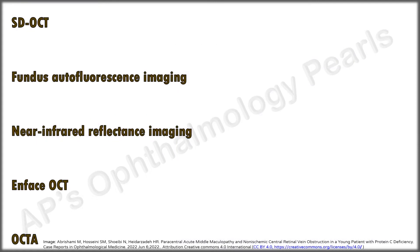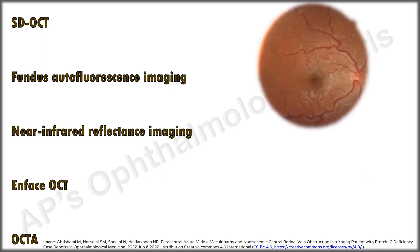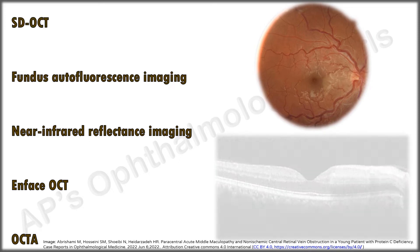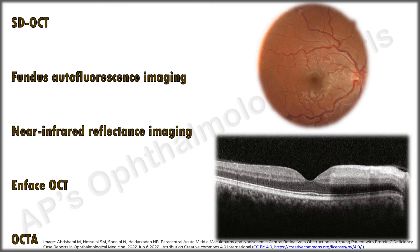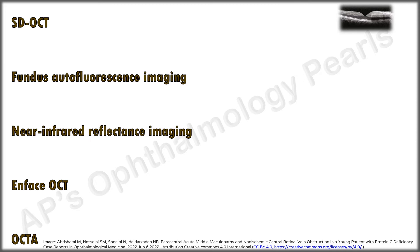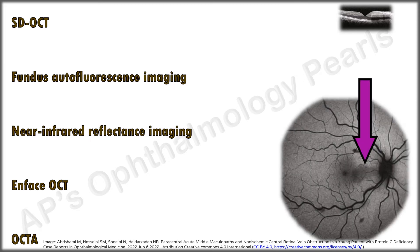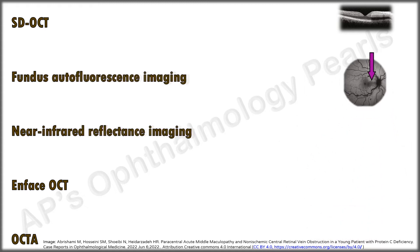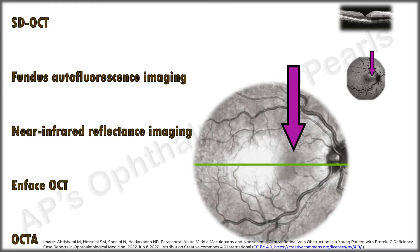These are the various modalities to detect PAM. This is the fundus of a young male with non-ischemic CRVO. There is a subtle greyish lesion in the region of the papillomacular bundle, but this can be easily missed. This is the OCT picture showing PAM. The autofluorescence imaging shows a hypofluorescent region. Near-infrared reflectance imaging shows a greyish region with sharp borders in the papillomacular bundle.